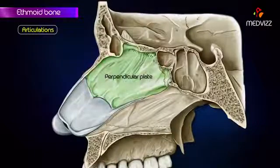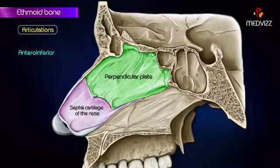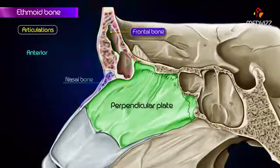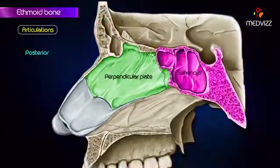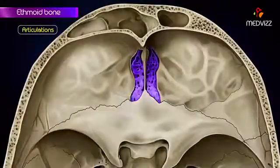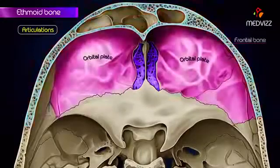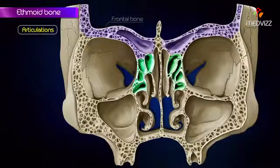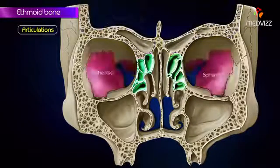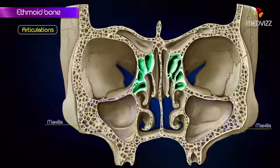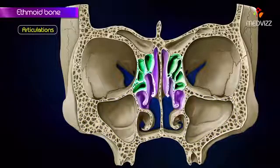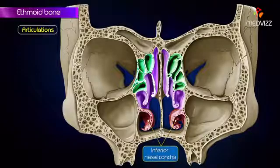The perpendicular plate of the ethmoid bone articulates anterior-inferiorly with the septal cartilage of the nose, posterior-inferiorly with the vomer, anteriorly with the frontal and nasal bones, and posteriorly with the sphenoid. The cribriform plate articulates laterally with the orbital plate of the frontal bone and posteriorly with the sphenoid. The labyrinth articulates above with the frontal bone, posteriorly with the sphenoid, and laterally with the maxilla, the palatine bone, and the lacrimal bone. The medial aspect of the labyrinth gives attachment to part of the inferior nasal concha.